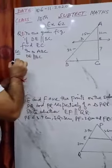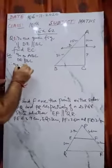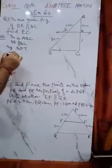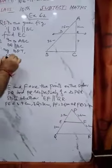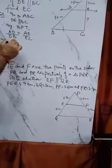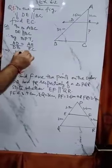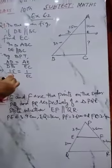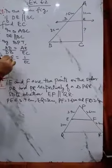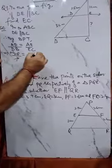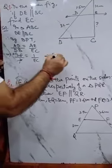Given, by BPT, the sides AD upon DB equals AE upon EC. Putting the values, 1.5 upon 3 equals 1 upon EC. If you simplify, 3 into 0.5 equals EC.